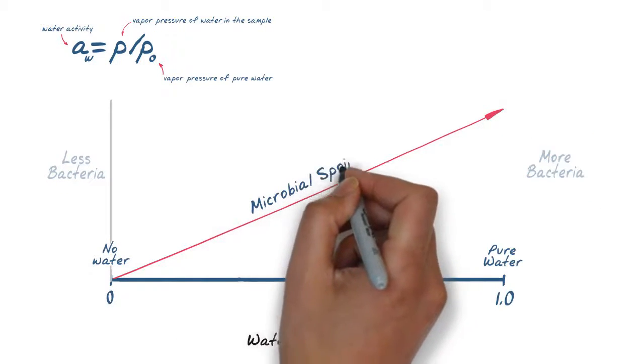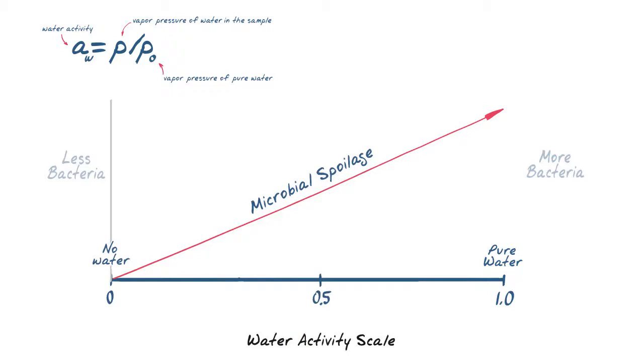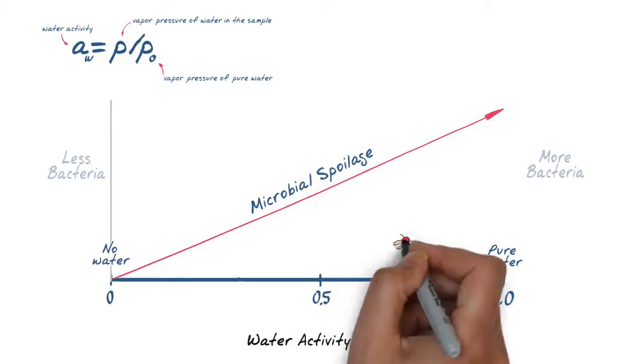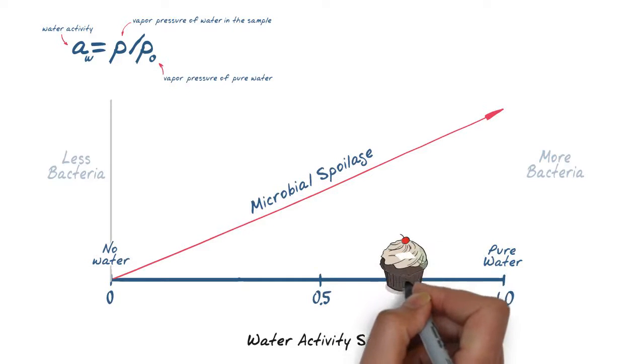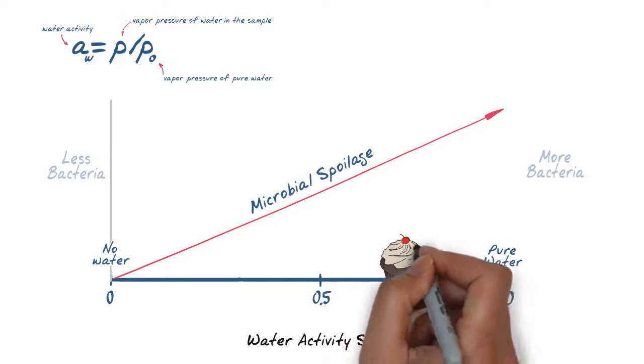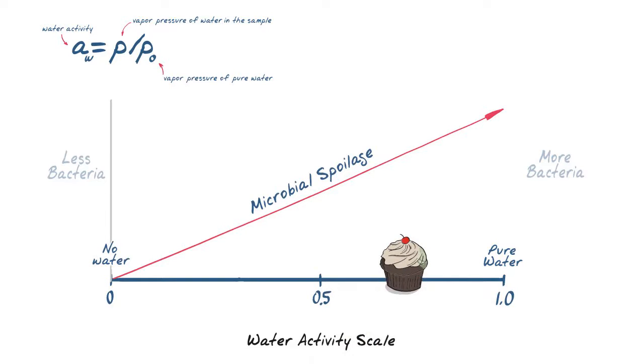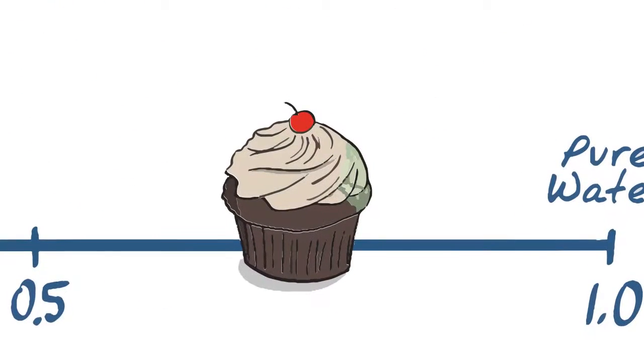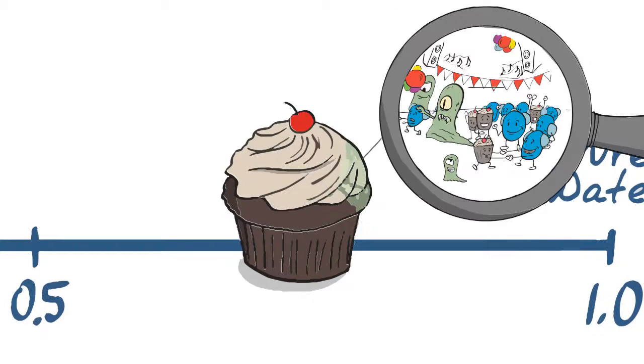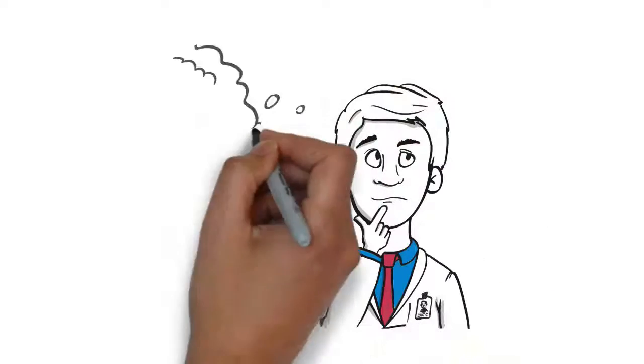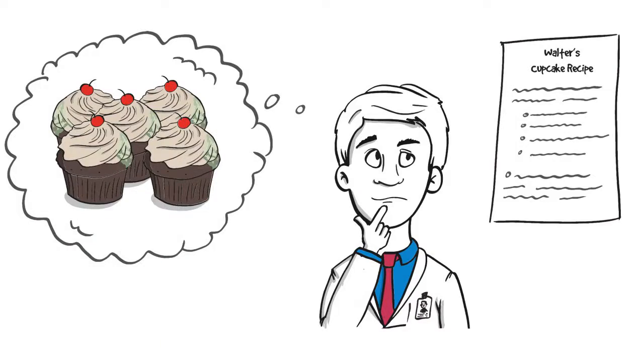Unbound water will exert vapor pressure which can be used to determine microbial spoilage, chemical, and physical stability. In relation to cupcakes, a water activity measurement of 0.5 or lower would mean the likelihood of microbial growth is very low. In Walter's cupcakes, which measured at 0.78 AW, it appears too many water molecules are unbound, facilitating mold growth.